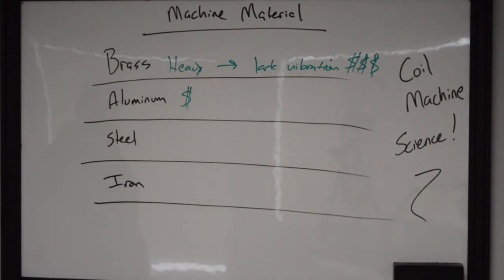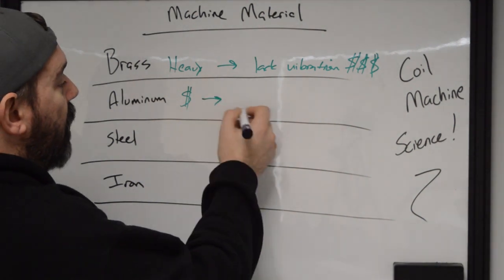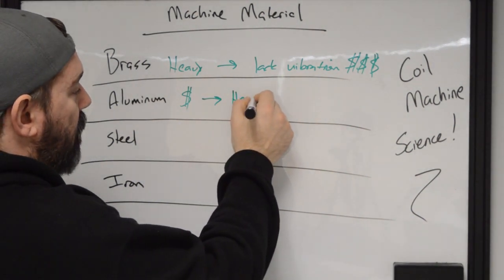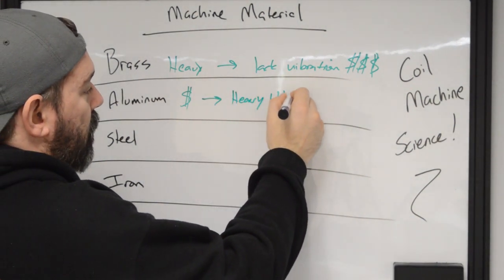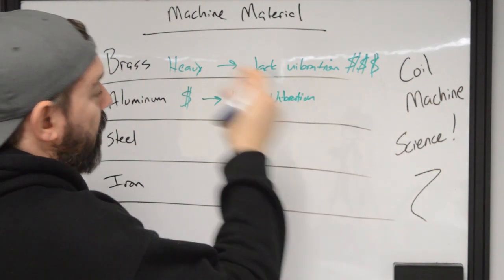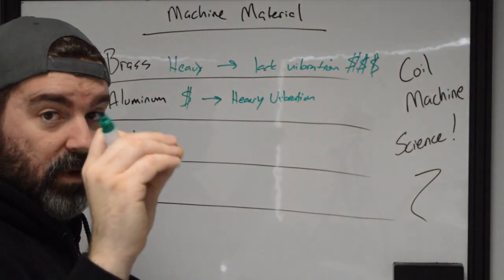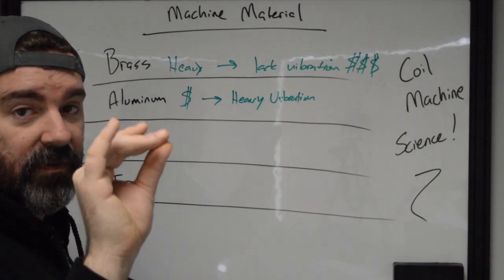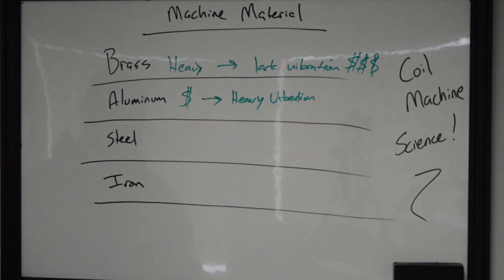There's different grades of aluminum, of course, but in general, aluminum is always going to have very heavy vibration. These are the machines when you first start out and you're using them, your fingers go numb. And then after you've been tattooing like five hours, every time you touch your finger together, it feels like it's being electrocuted. That's an aluminum frame.